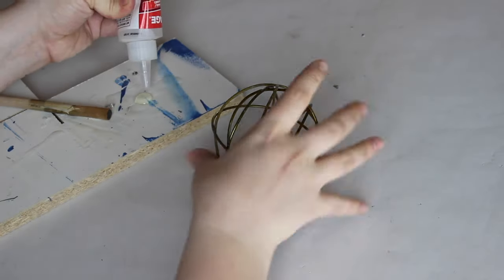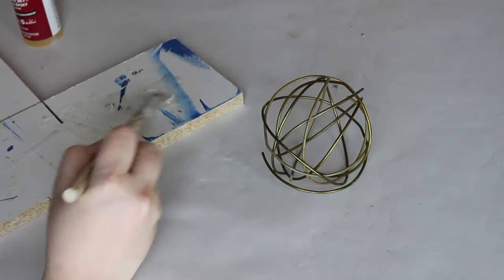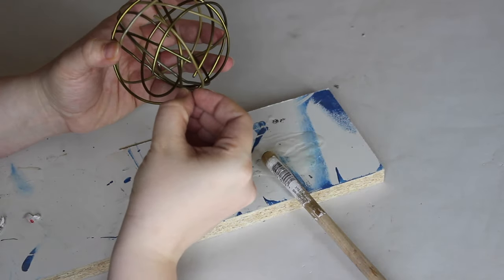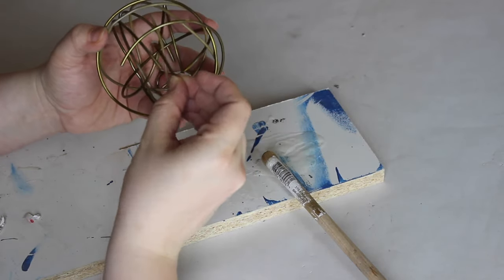Now you want to mix your epoxy. Apply that epoxy to any spot on your orb where the hangers overlap.